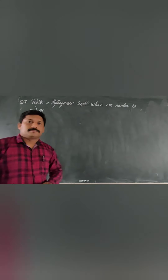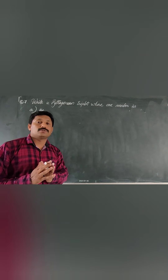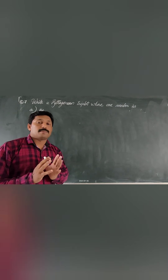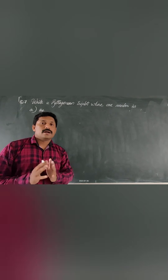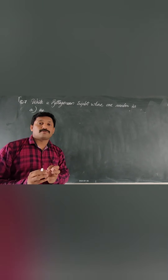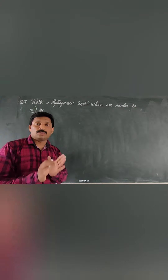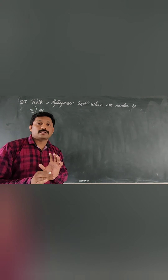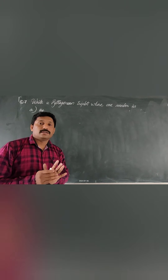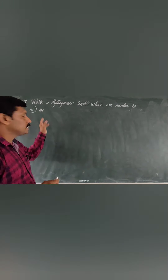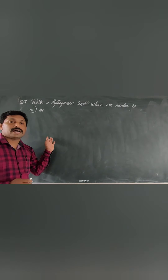Question number 7: write a Pythagorean triplet whose first member is 14. Pythagorean triplets are 3 numbers where the square of the highest number equals the sum of the squares of the other two smaller numbers. The formula for finding Pythagorean triplets is: first number = 2n, second number = n squared minus 1, and third number = n squared plus 1.